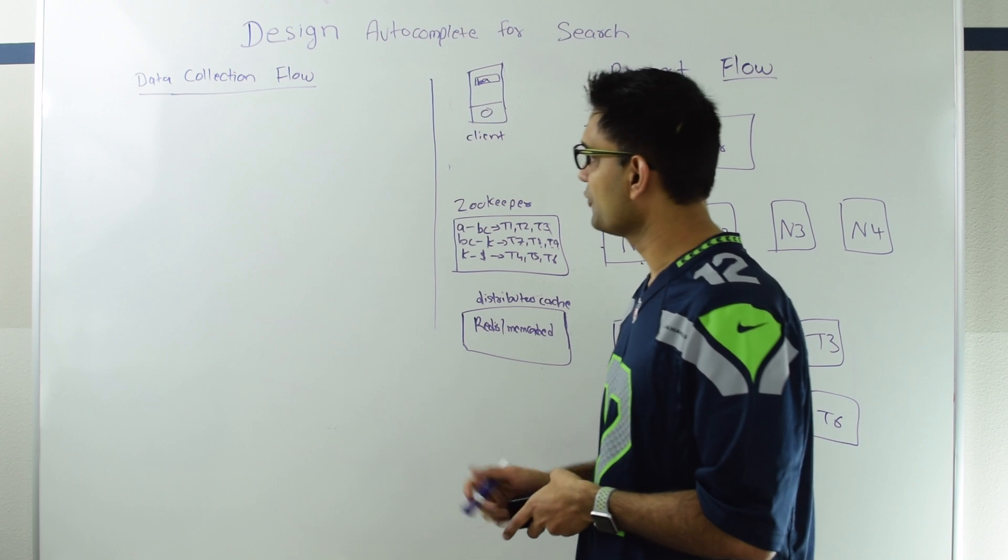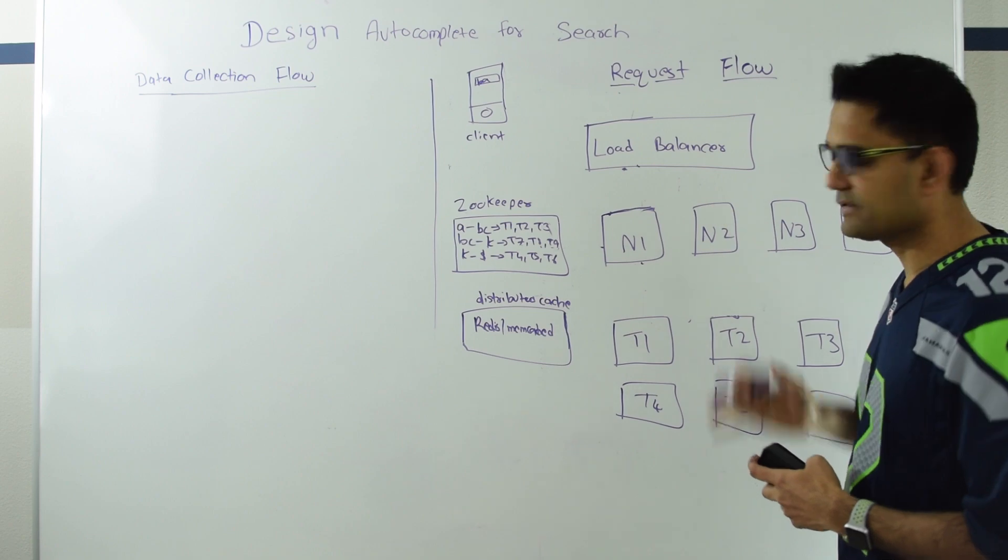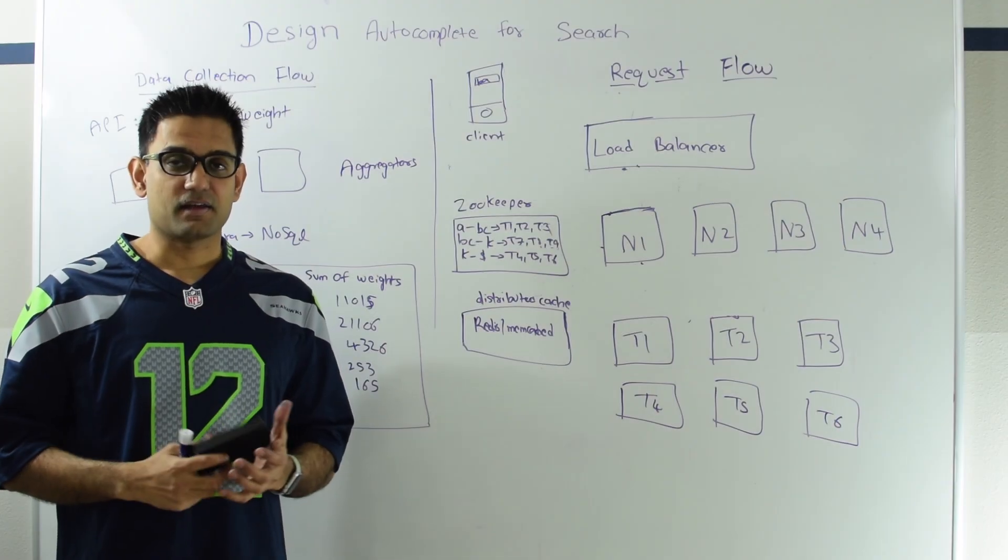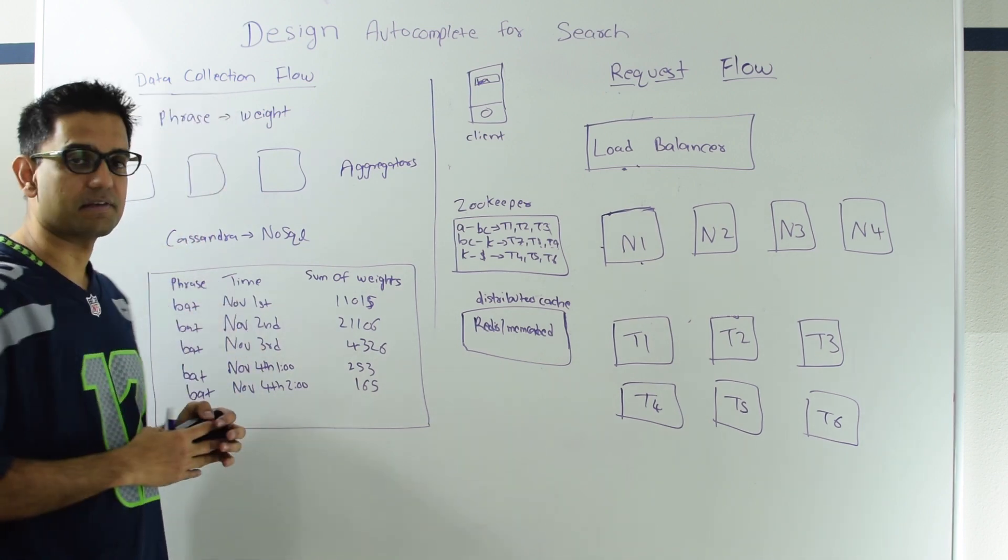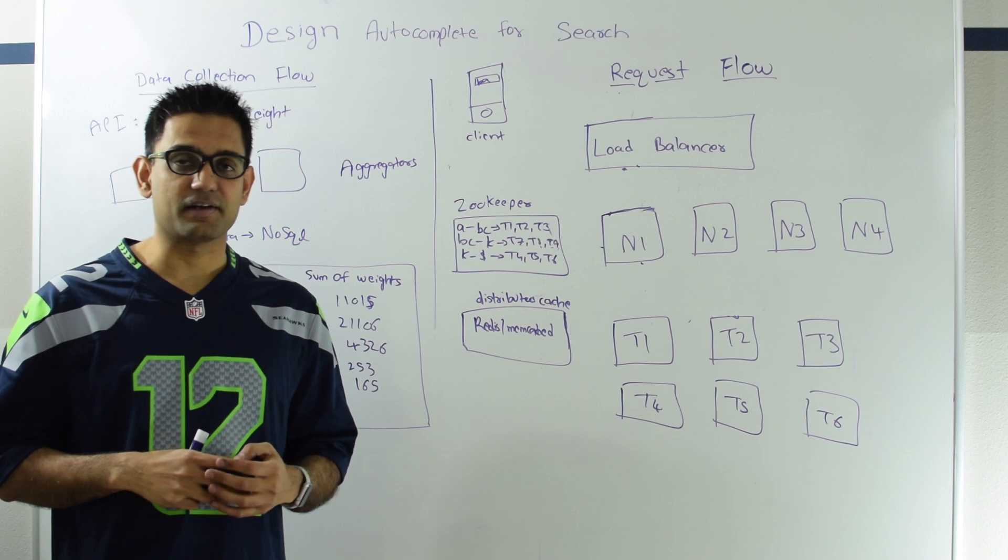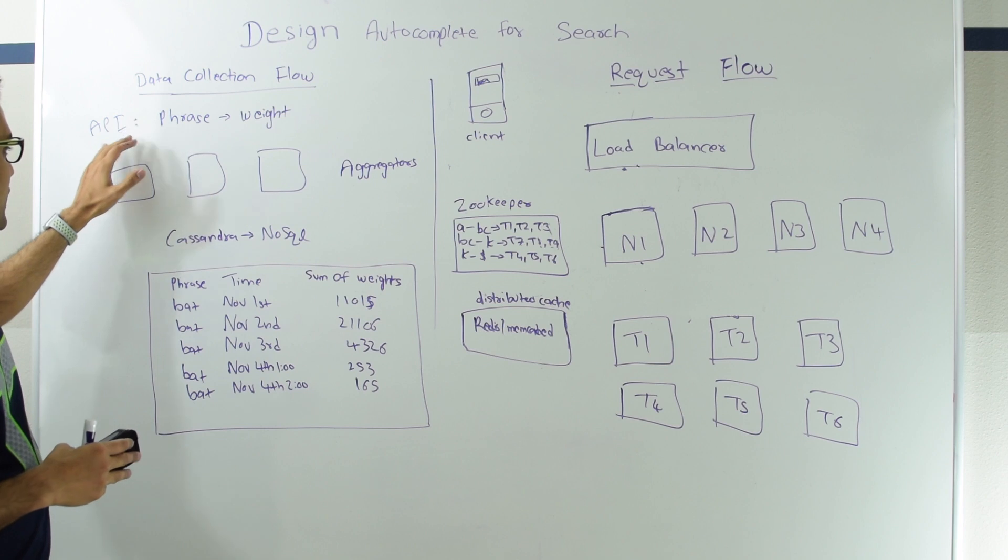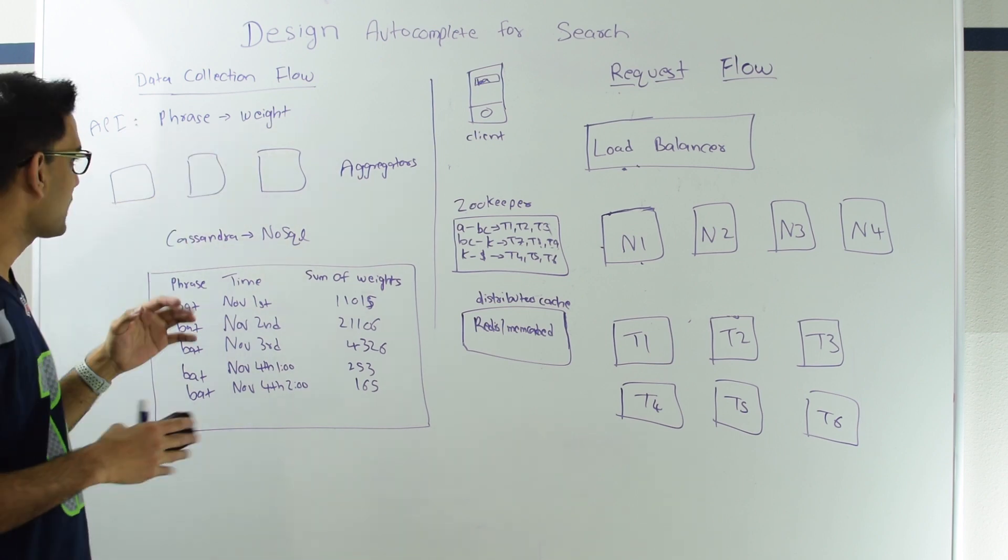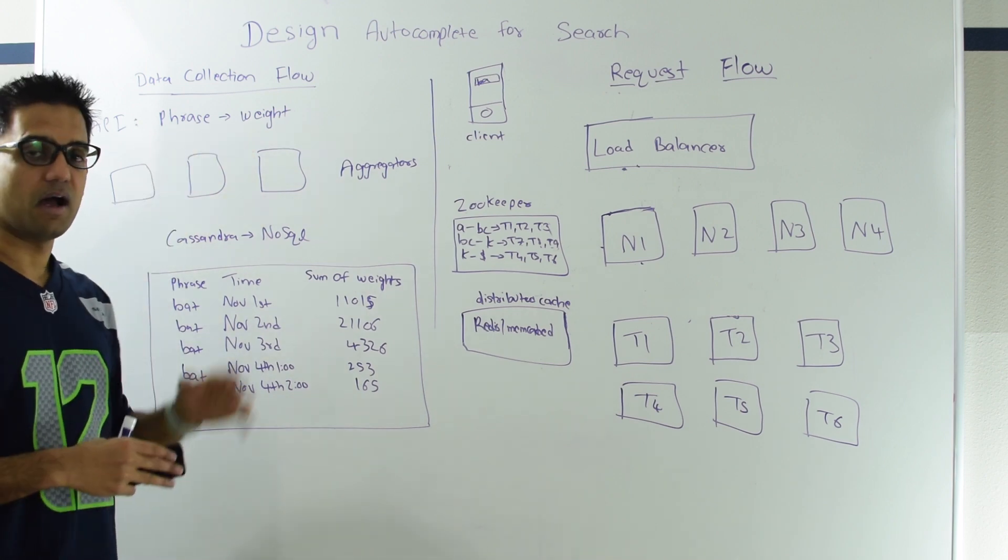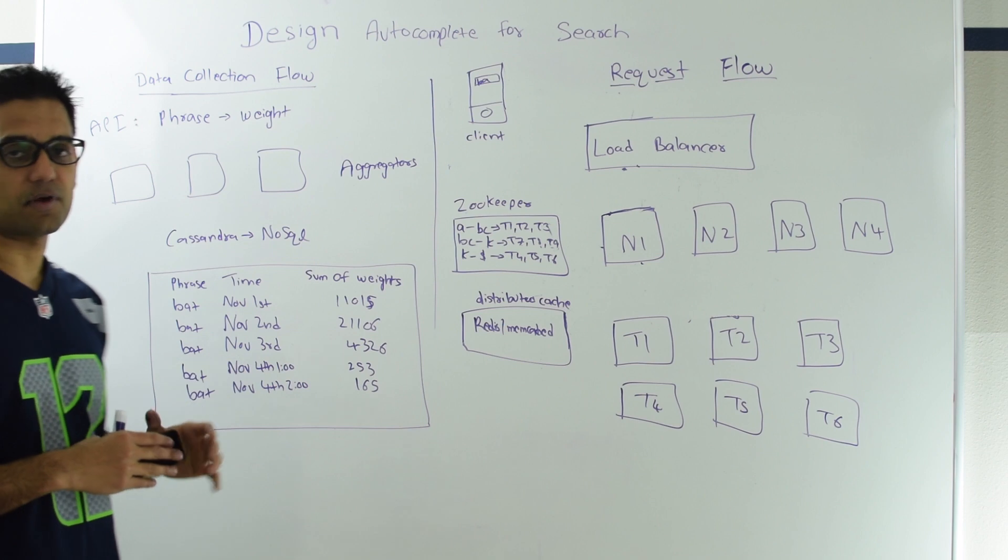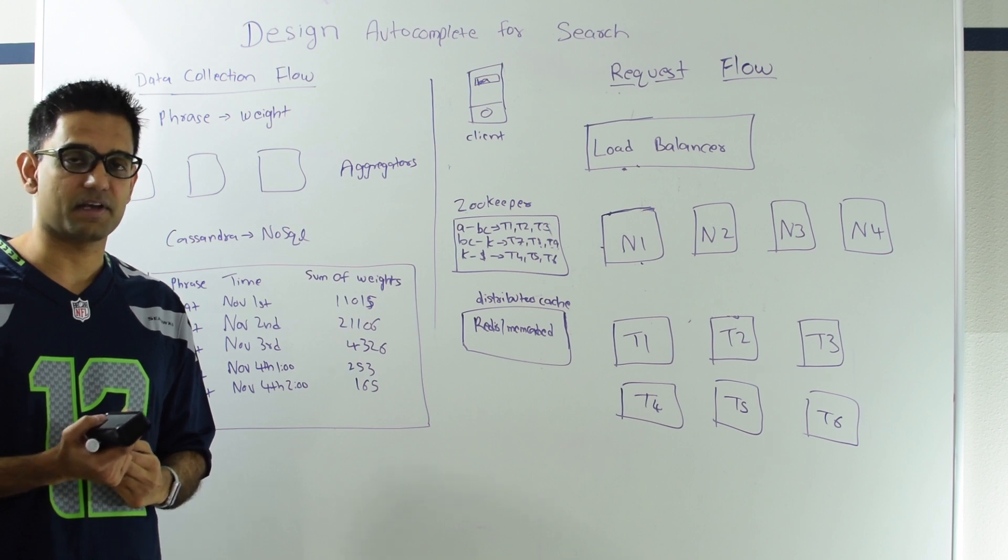So next, let's talk about how we are going to collect the data and put that into the trie such that it can be used to answer prefix-based queries. Data collection is equally challenging, and just to be clear, this is just one way of collecting data. There are many different techniques. In this technique, our API is phrase and a weight. Every time someone searches something on Google, they send this phrase to us with some weight attached to it. How they do that, we don't care. That's outside the scope. Ultimately, our data collection flow is getting a stream of phrases and their weights.